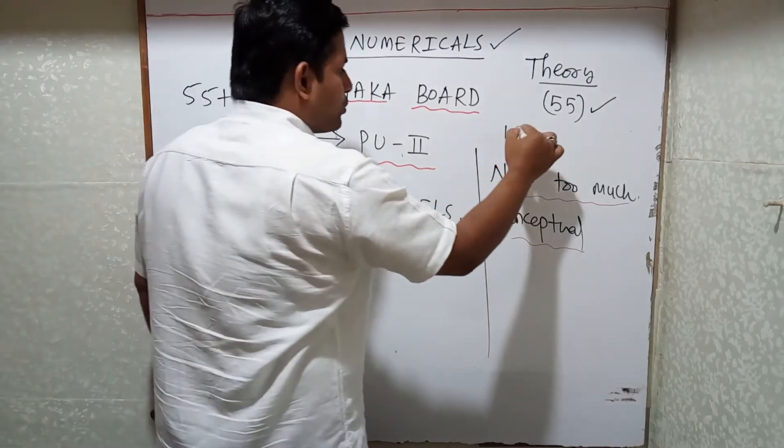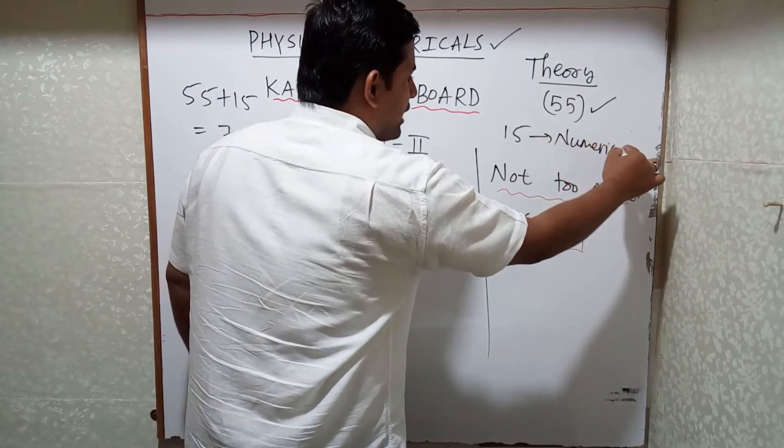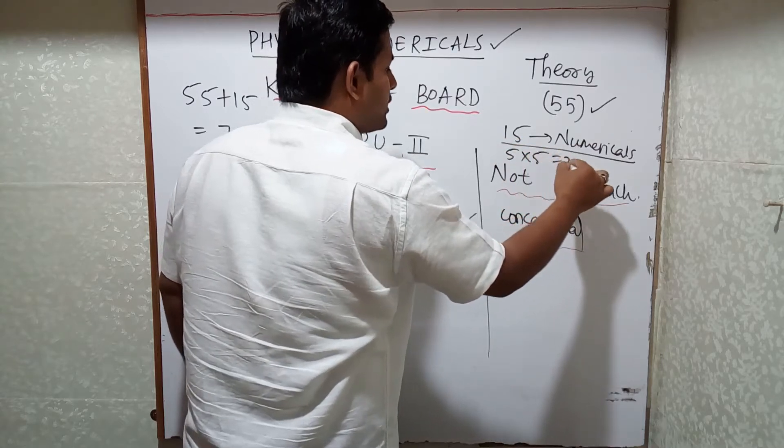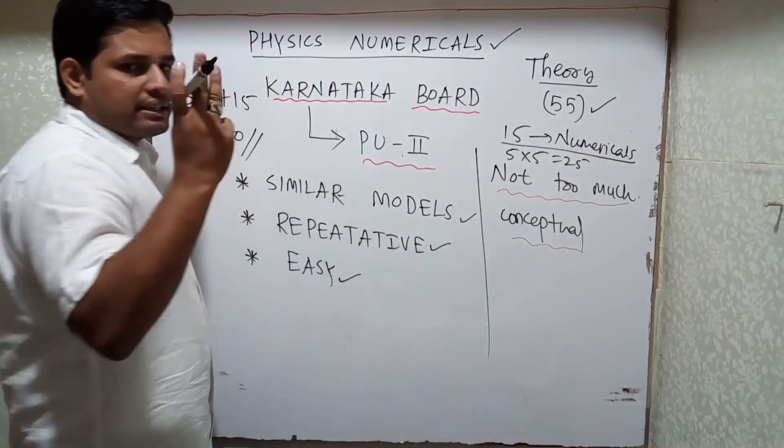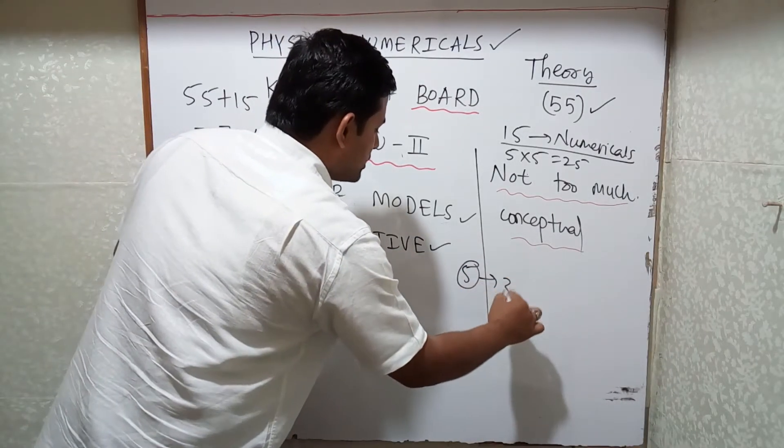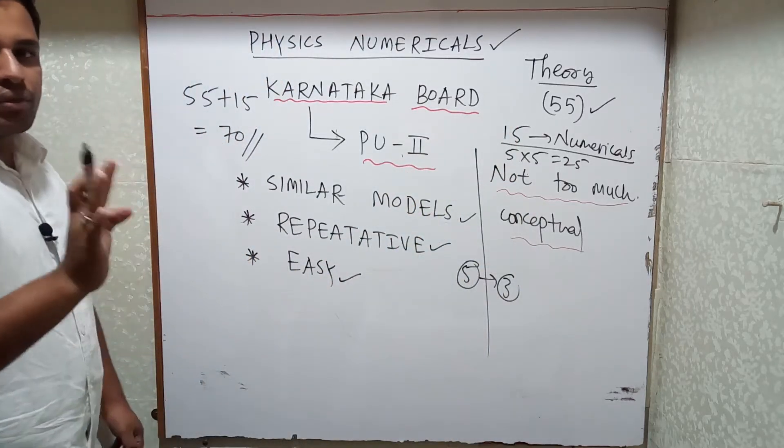But whatever 15 marks numericals are there, that is the main problem. Five numericals will be there—five into five is 25. In that you have to attempt three numericals out of five, so that is five into three, that's equal to 15 marks. This is what you are supposed to do.